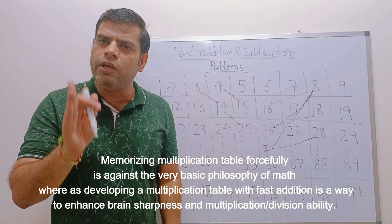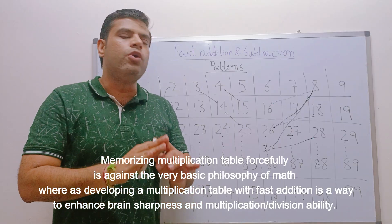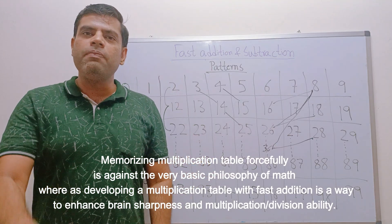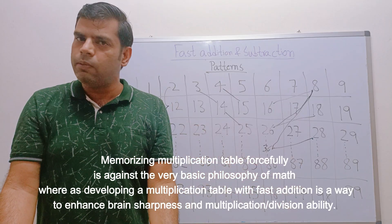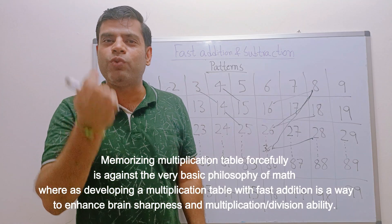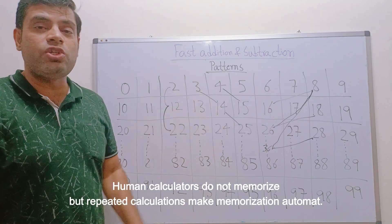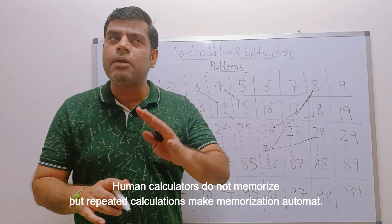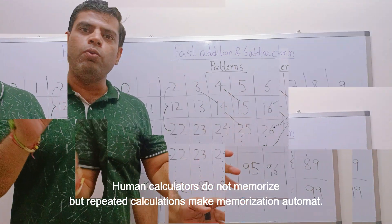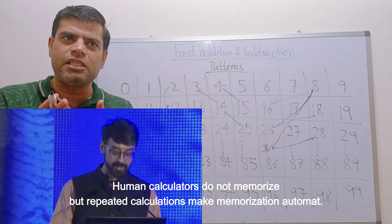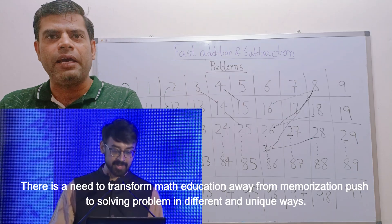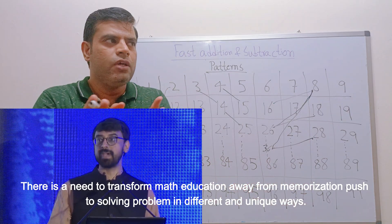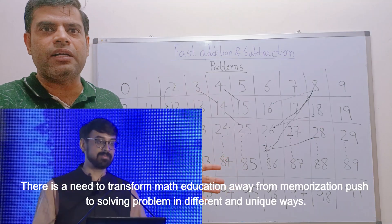Once you transform your kid into a human calculator, they don't memorize the table — human calculators develop the table. They calculate it themselves. Give me the table of 51 or 71 — I'll tell you the multiplication table. I have not even memorized the table of two or three in my whole life. The person who won the Fields Medal recently — currently considered the best mathematician of India, Manjul Bhargava — and many other mathematicians have said that the education system globally is too focused on memorization in mathematics.